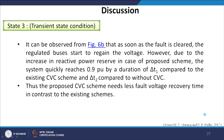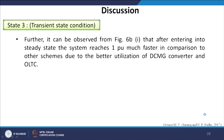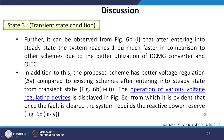The proposed CVC scheme needs less fault voltage recovery time compared to the existing schemes. It can also be observed that after entering steady state, the system reaches 1 per unit much faster compared to other schemes, due to better utilization of the DC microgrid converter and OLTC. The proposed scheme also has better voltage regulation after entering steady state from the transient state. Once the fault is cleared, the system rebuilds the reactive power reserve.